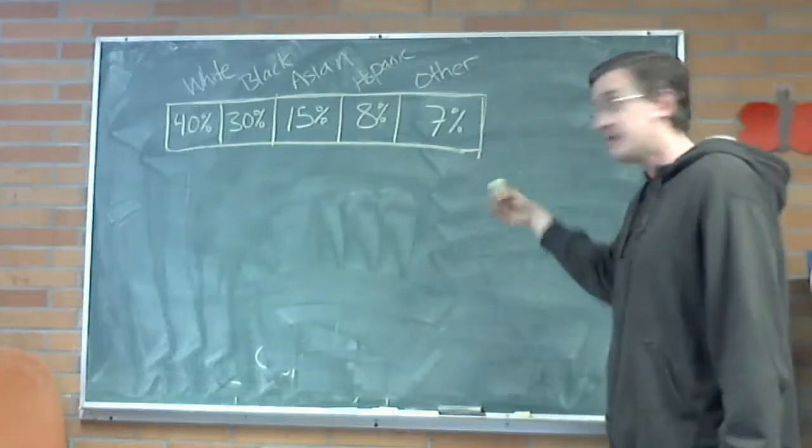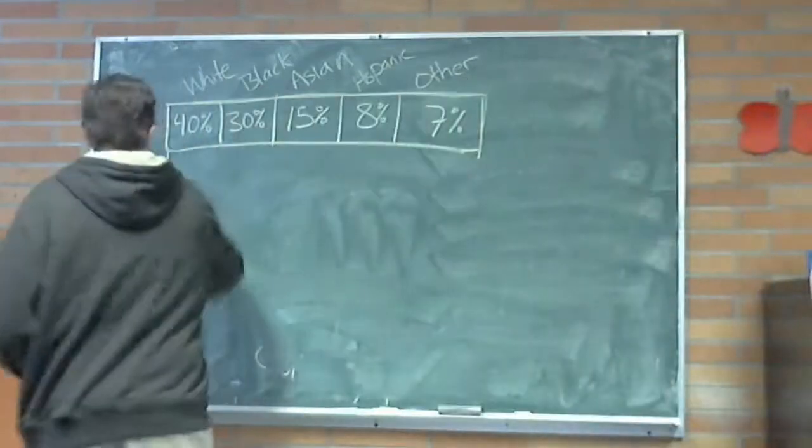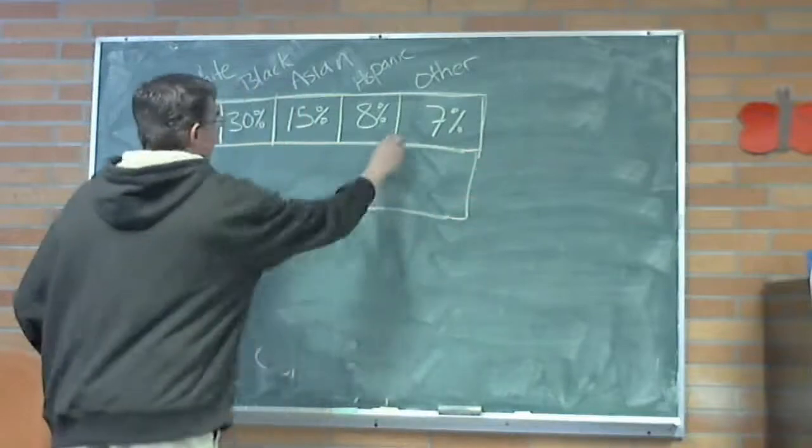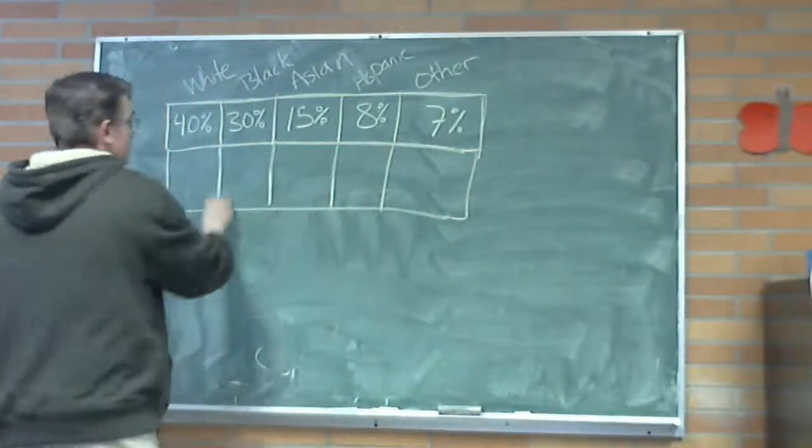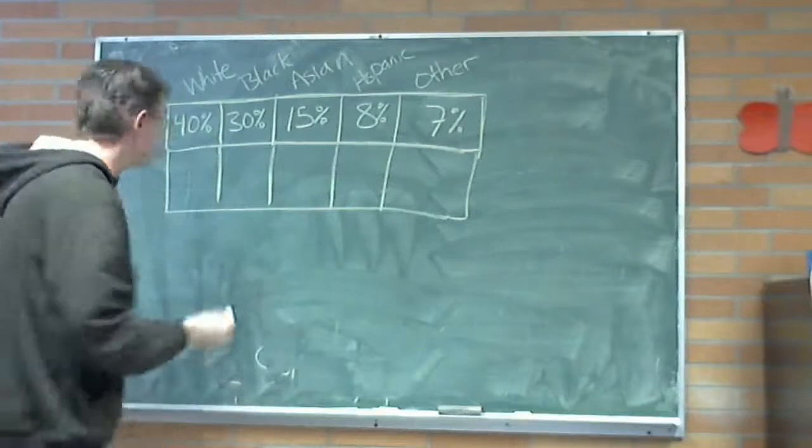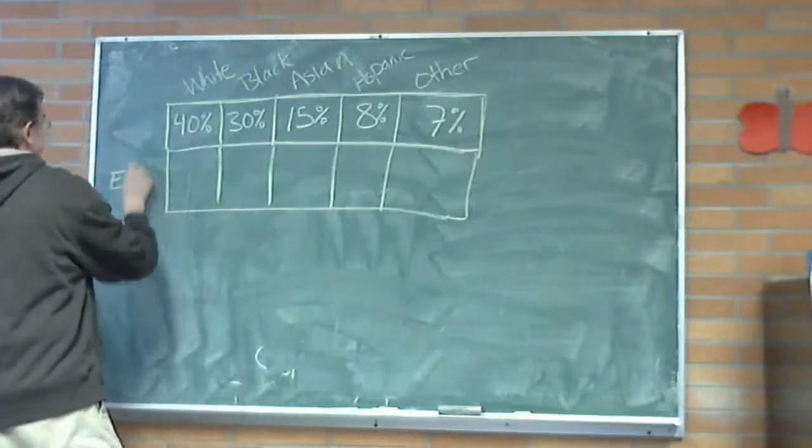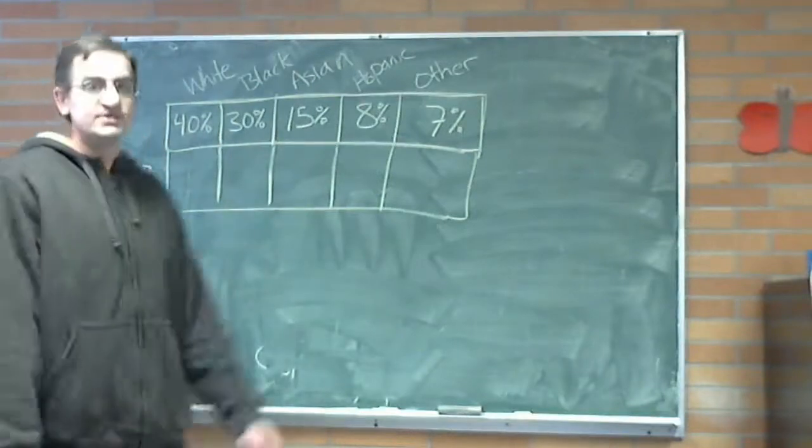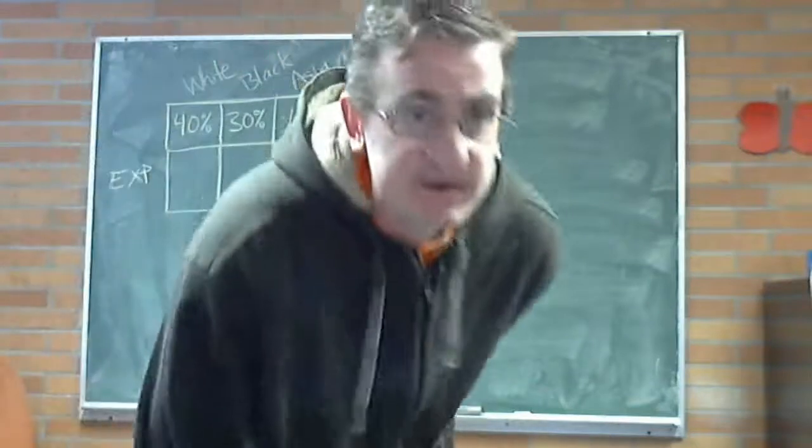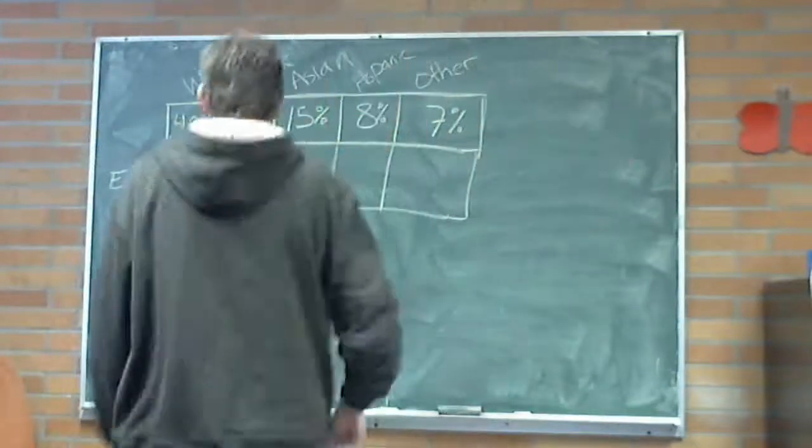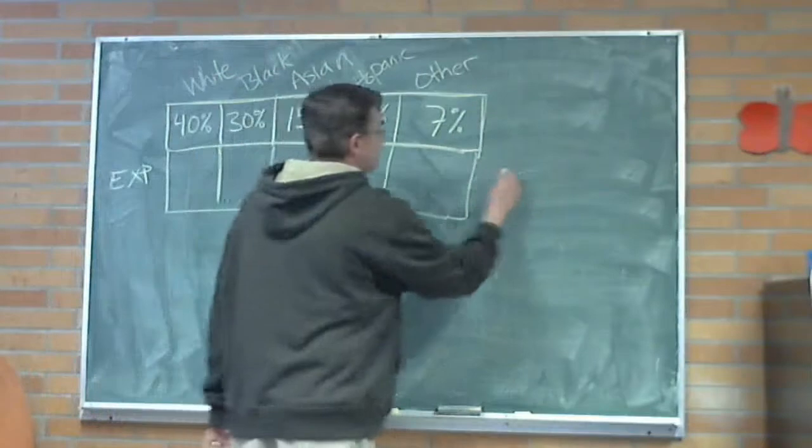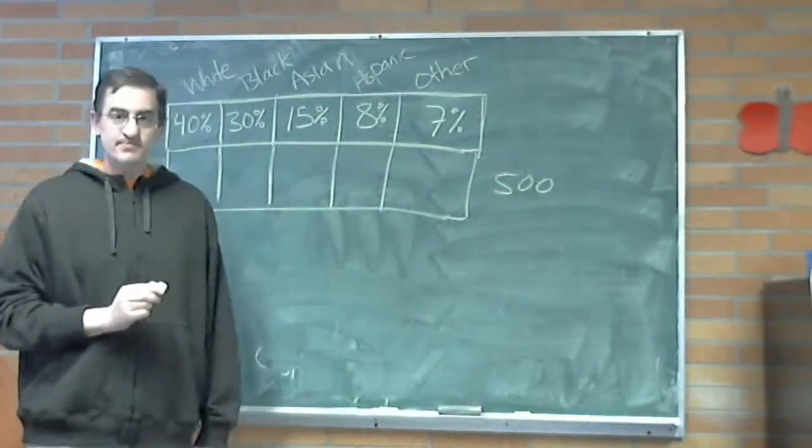We work with the expected counts. So, I am going to add a row and I am going to use these percentages, but only to help me get my expected values. Okay? So, let's say that we had 500, which is the number that I have already played with a little bit. We are going to have 500 people come through the airport.